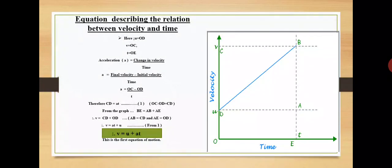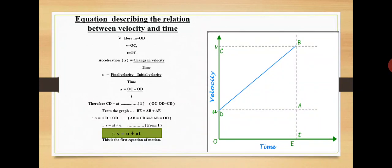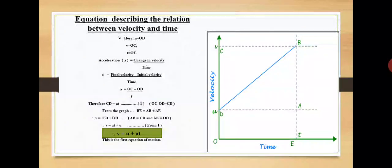Draw a line parallel to the y-axis passing through B; this will cross the x-axis at E. Draw a line parallel to the x-axis passing through D; this will cross line BE at A. From the graph, BE = AB + AE. Therefore, v = CD + OD, as AB = CD and AE = OD. So v = at + u. Rearranging, we get v = u + at. This is the first equation of motion.